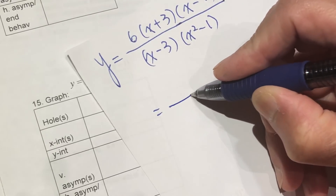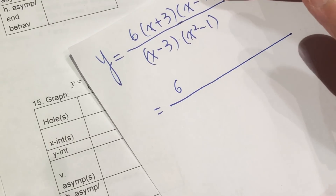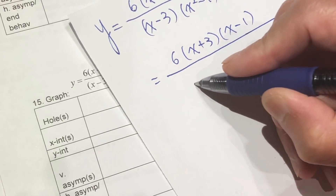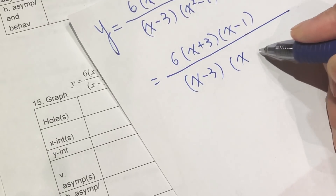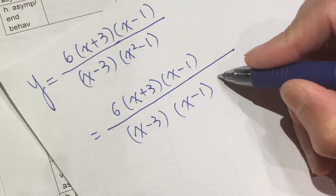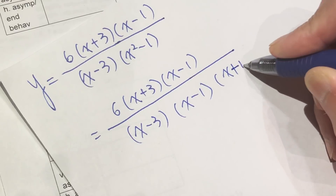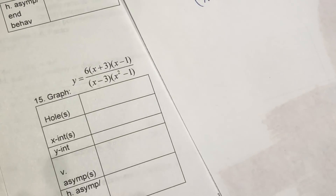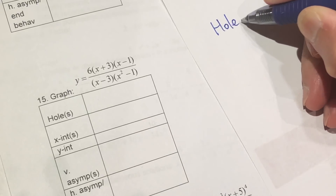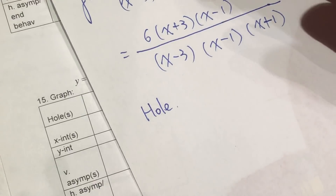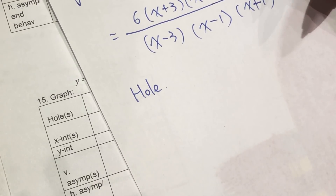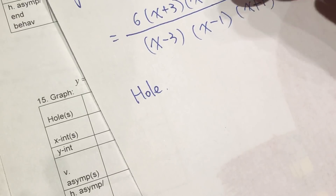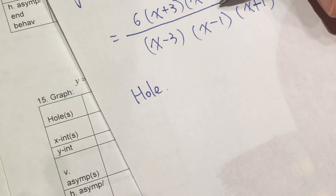We will expand it. The numerator is good, so we copy the numerator — it does not need any change. The denominator, however, needs a little work. x² - 1 equals (x + 1)(x - 1). So here is the completely factorized form. So where is the hole? The hole means we can find a factor that appears in both the numerator and denominator — they both have the same factor, so we can cross-cancel.